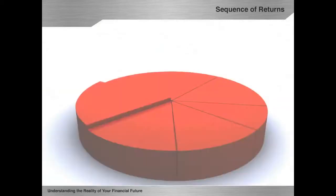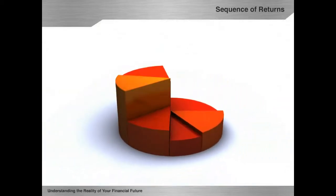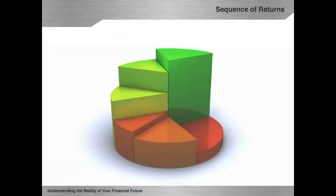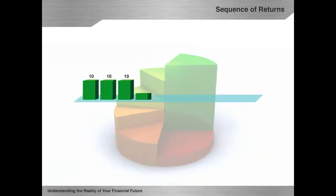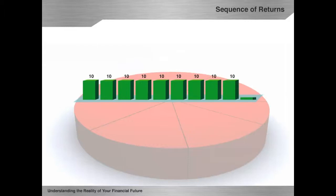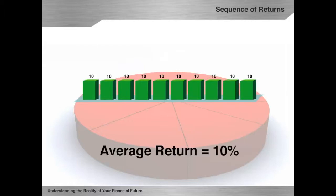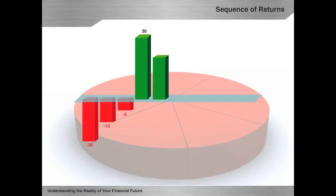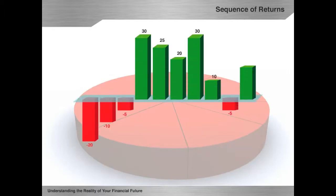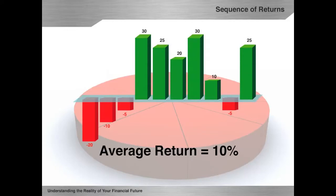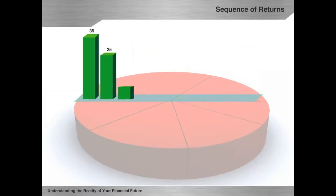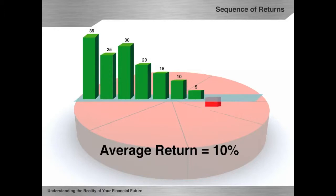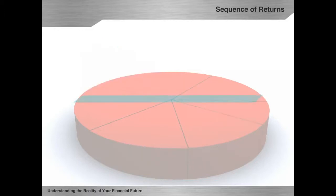Now let's look at four different hypothetical portfolios over a 10-year period. Portfolio A achieved these returns every year for 10 years, so that the average rate of return over 10 years was 10%. Portfolio B achieved these annual rates of return and also averaged 10% over the 10 years. Portfolio C averaged 10% over 10 years. Finally, Portfolio D averaged 8% over 10 years.